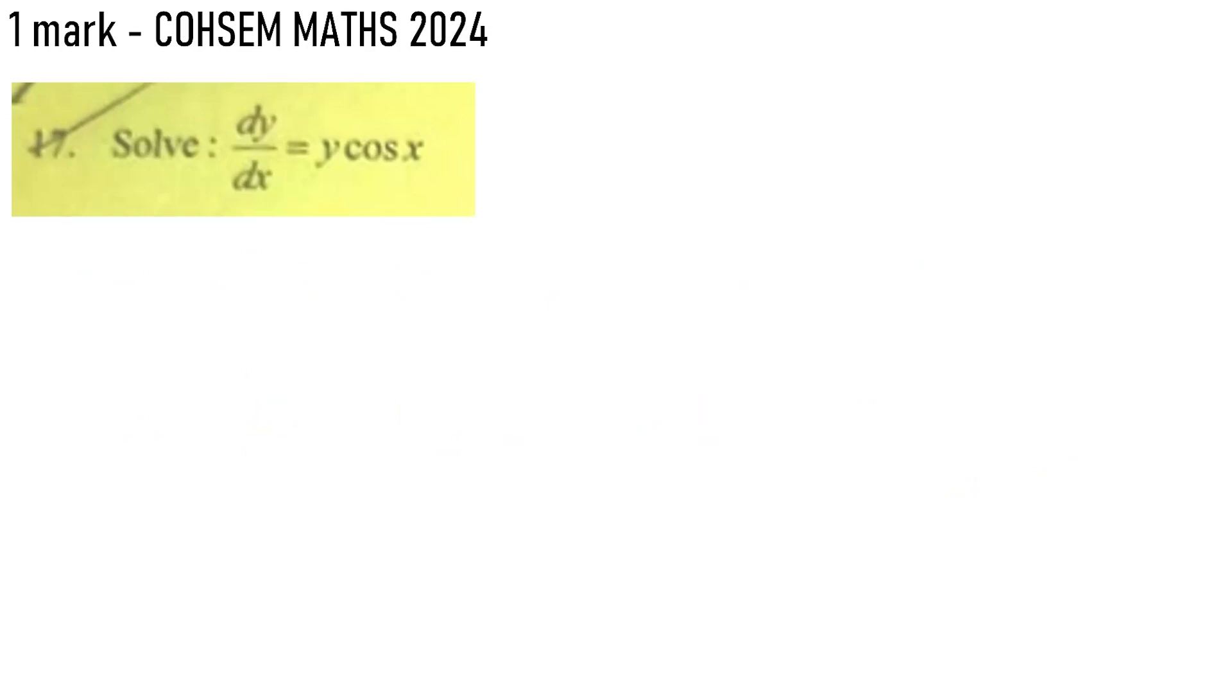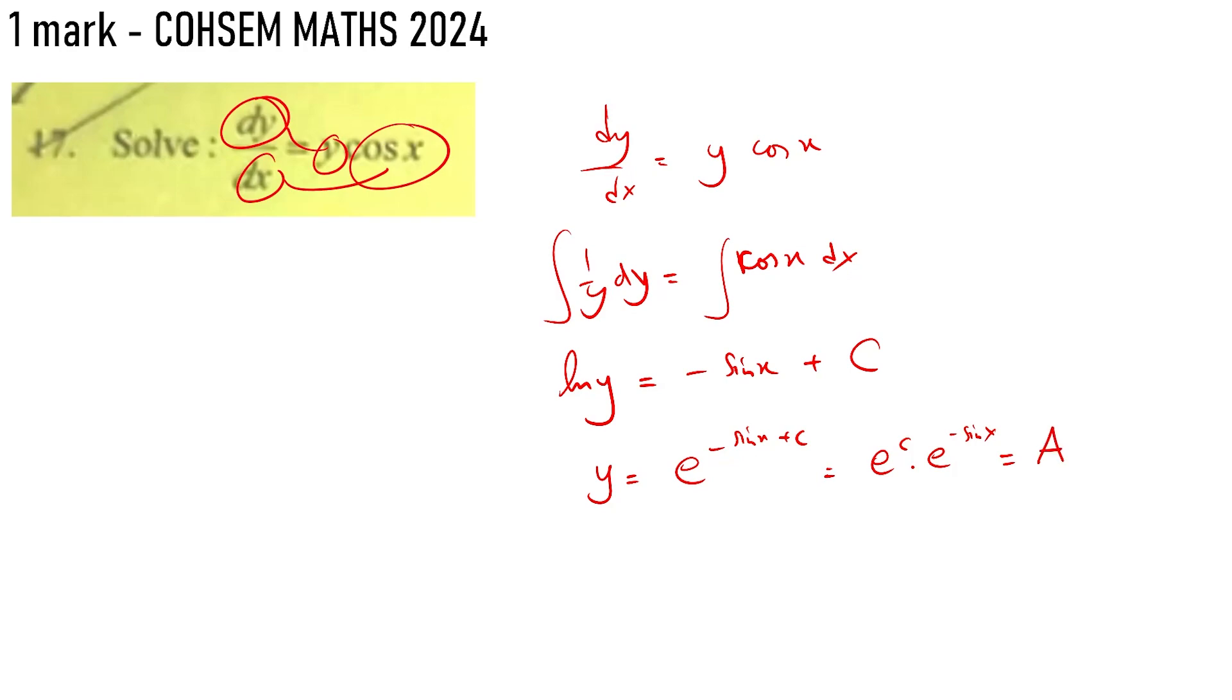Variables separable differential equations. You separate the variables: y with y, and x with x. Integrating both sides. For example, dy by y equals cos x dx. Integrating, we get ln y equals minus sin x plus c. So y equals e to the power minus sin x plus c, which equals a constant times e to the power minus sin x.